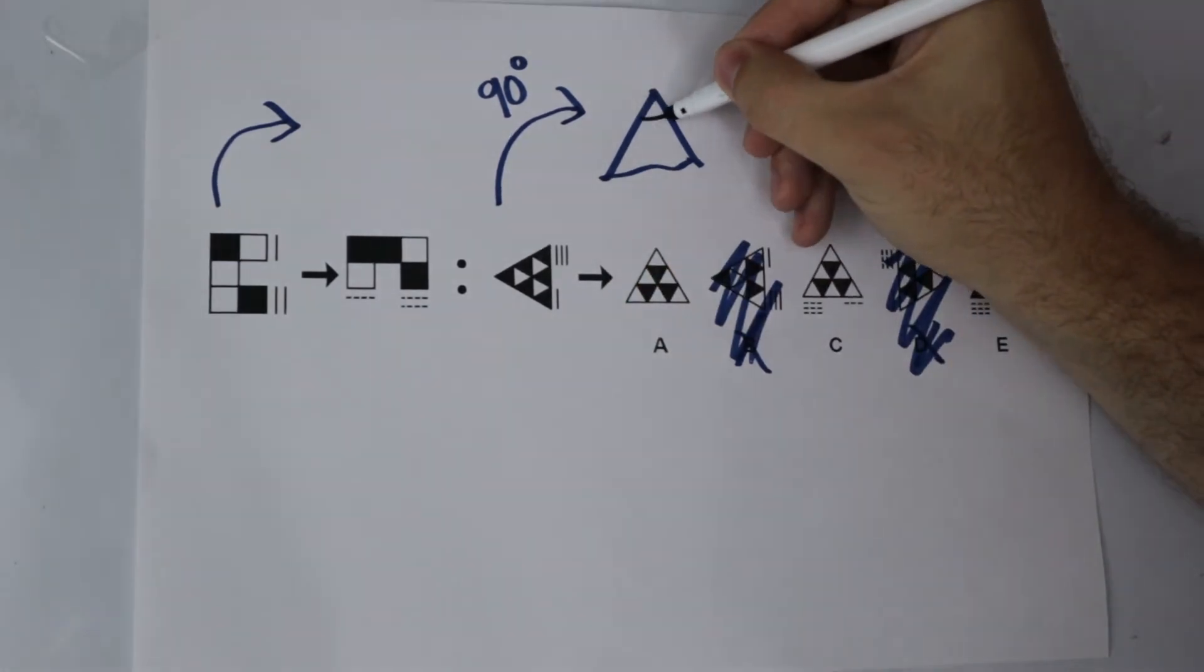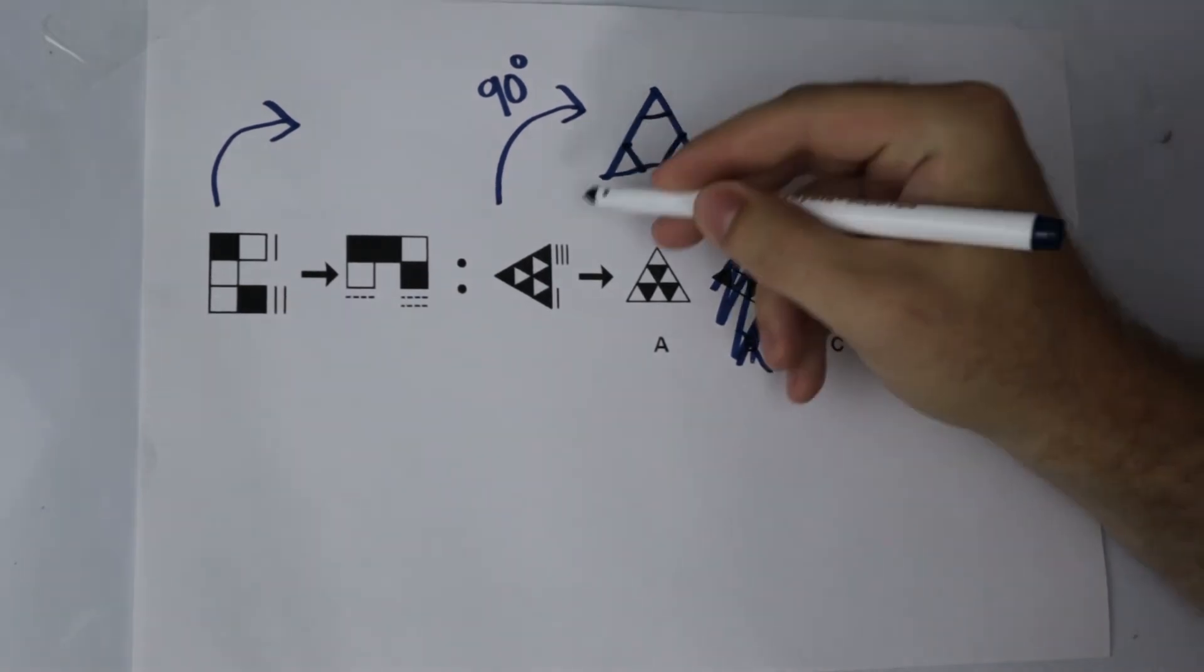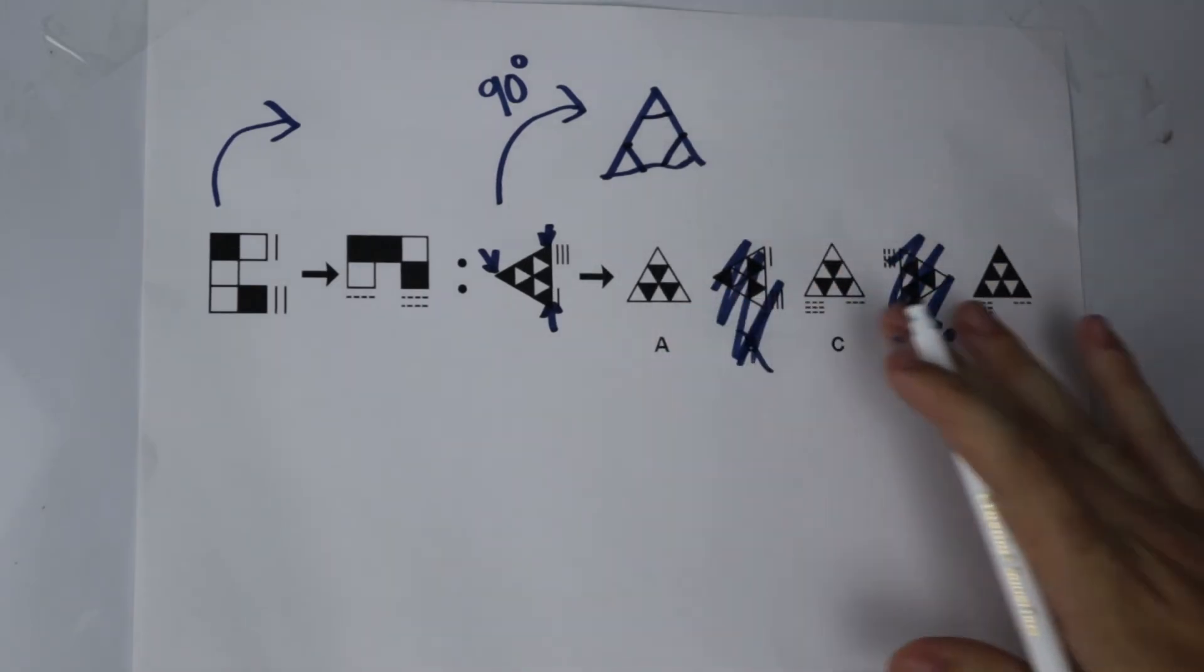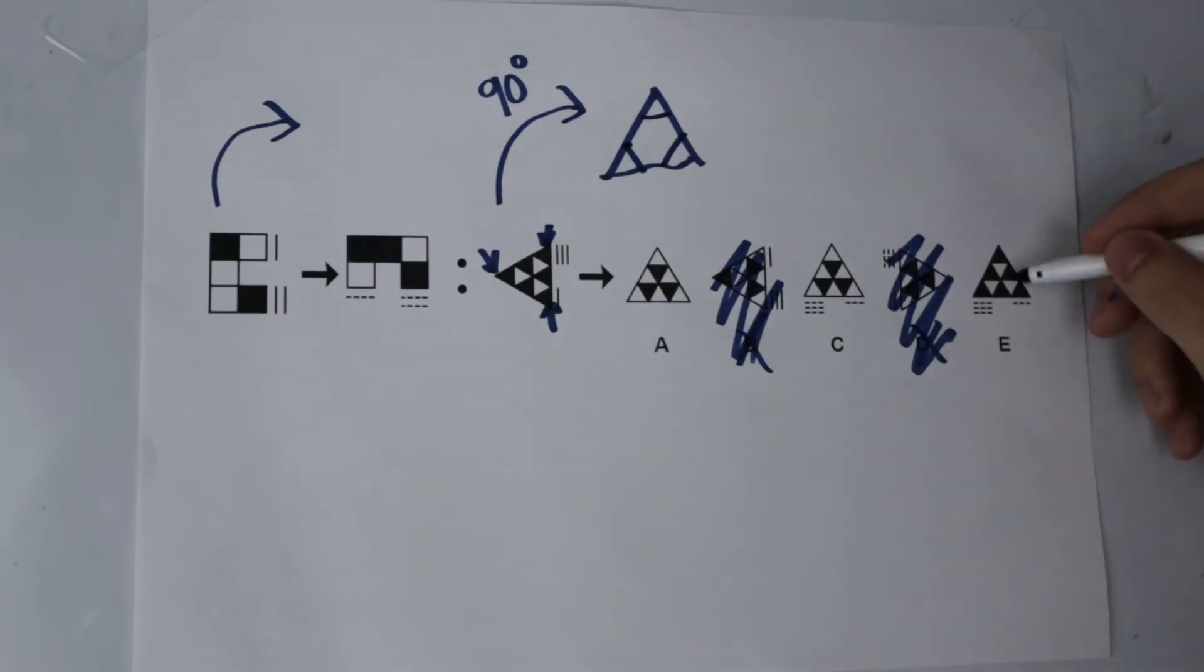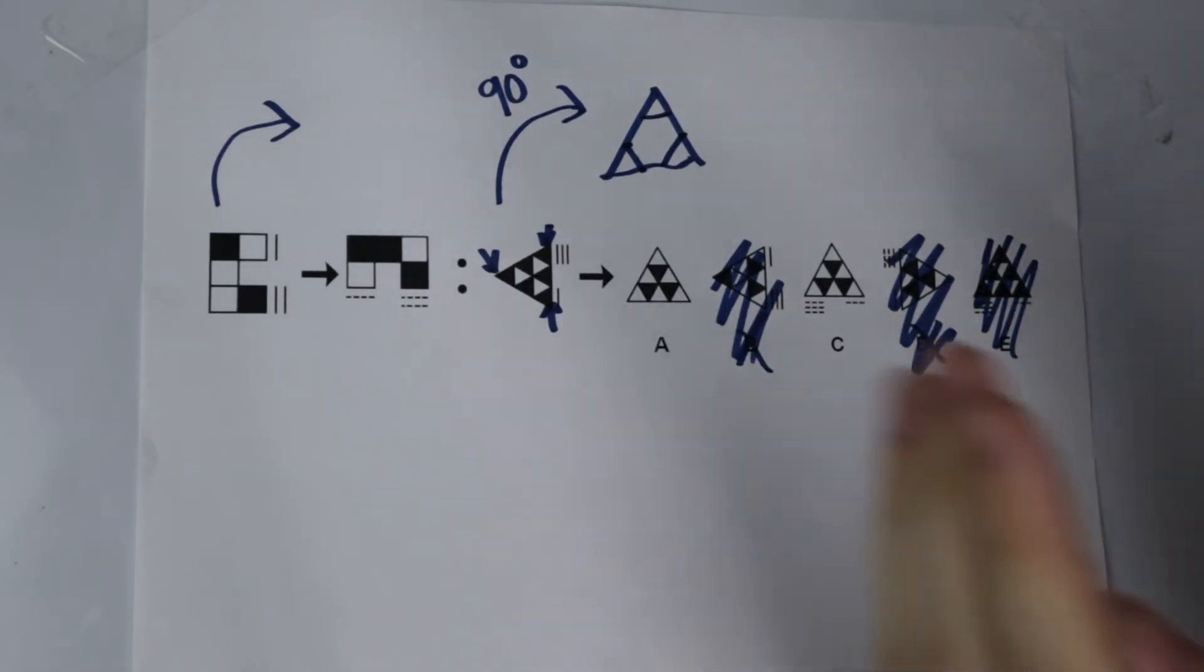So I know that the outside triangles of my shape are going to have to be white because you can see here the corners are black. So I am going to get rid of any triangles here which have the outside triangles as black, and that means I can get rid of E. So again I have got rid of an answer. Only two left now.